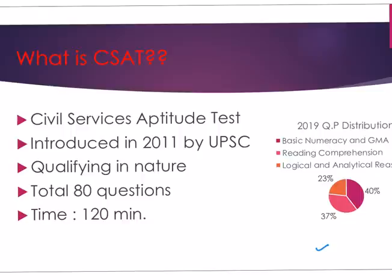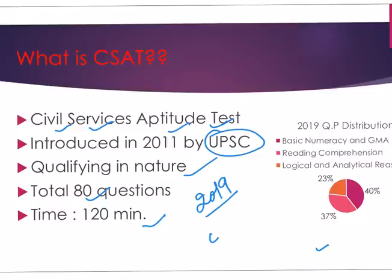The full form of CSAT paper is Civil Services Aptitude Test. By this paper, UPSC checks your mental ability, reasoning, and analytical ability. This paper is only qualifying in nature. There are total 80 questions and total time is 120 minutes. If we see the 2019 paper, from 80 questions, 48 questions are asked from the aptitude and reasoning section only, and remaining 32 questions are asked from reading comprehension.